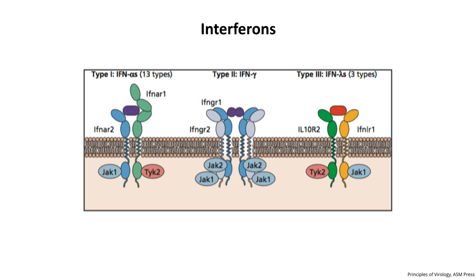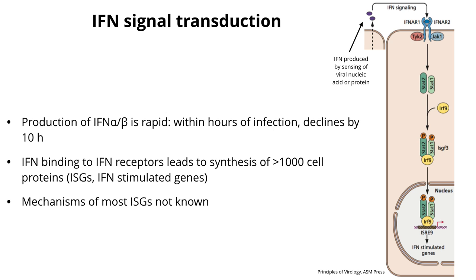We talk about three classes of interferons: type 1 (alpha and beta), type 2 (gamma), and type 3 (lambda), each with a distinct receptor on the cell surface. Interferons are produced very quickly after infection—within minutes or hours—and then shut off after an initial burst. The interferon comes out of the infected cell, binds to interferon receptors on neighboring or the same cells, and that binding initiates a signaling cascade through kinases, ending in the production of mRNAs encoding interferon-stimulated genes (ISGs).